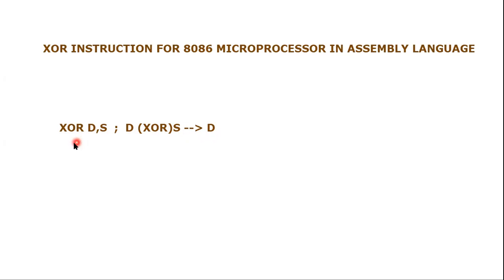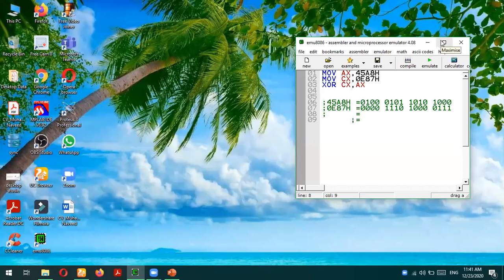XOR, or exclusive OR, is an important logical operation and will be performed during the execution of this instruction. Let's test this instruction in the EMU 8086 environment, as we have tested for AND and OR instructions. We are using almost a similar program to what we have used for AND and OR gates, so that the user can easily understand this tutorial as well.